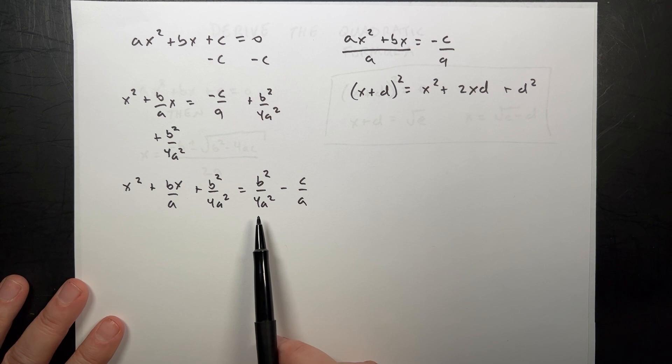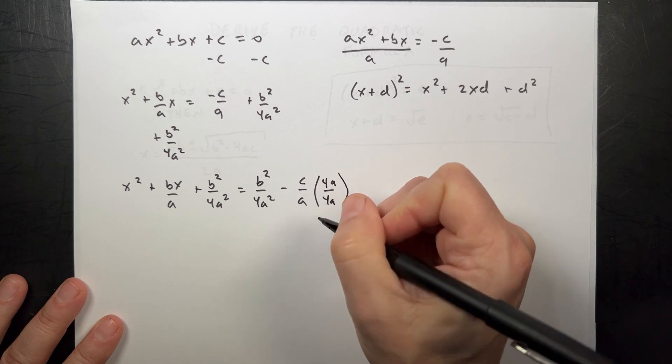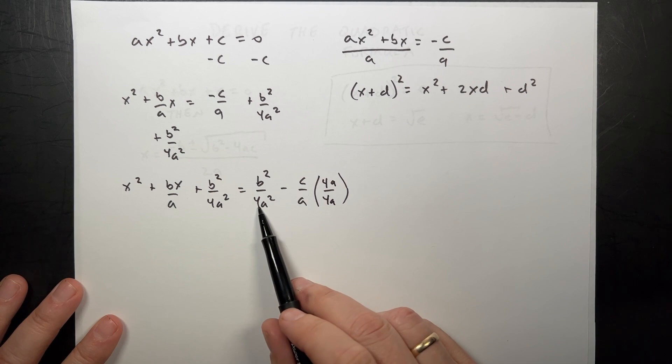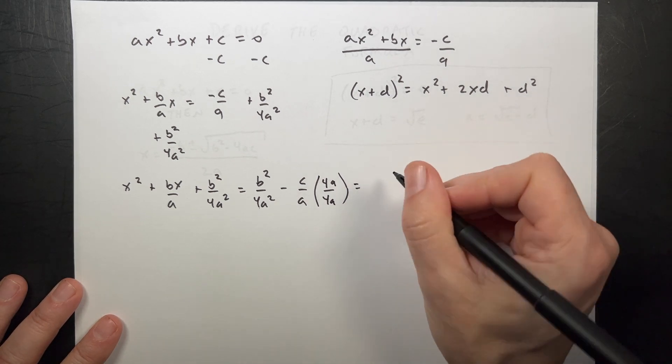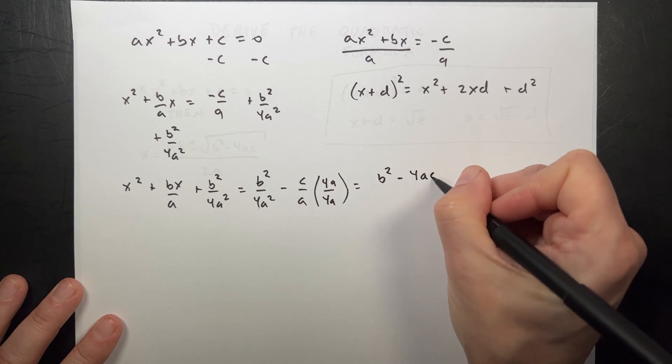But over here I have to simplify this. So let's just get a common denominator here. I'm going to multiply this by 4a over 4a. And so on the bottom I get 4a squared. That also has 4a squared. So now I can combine those two.